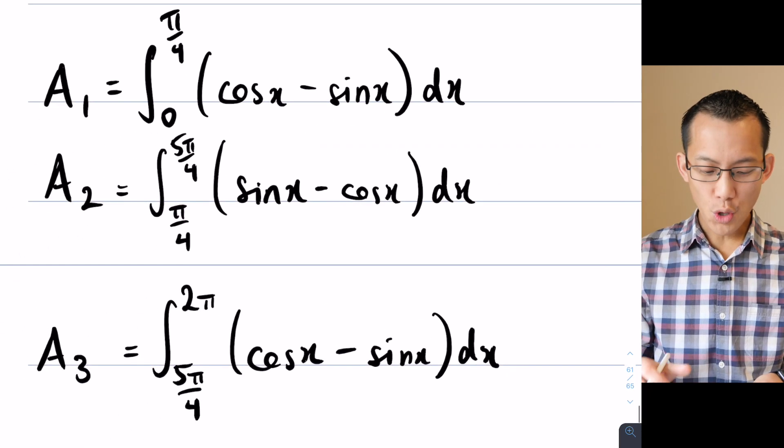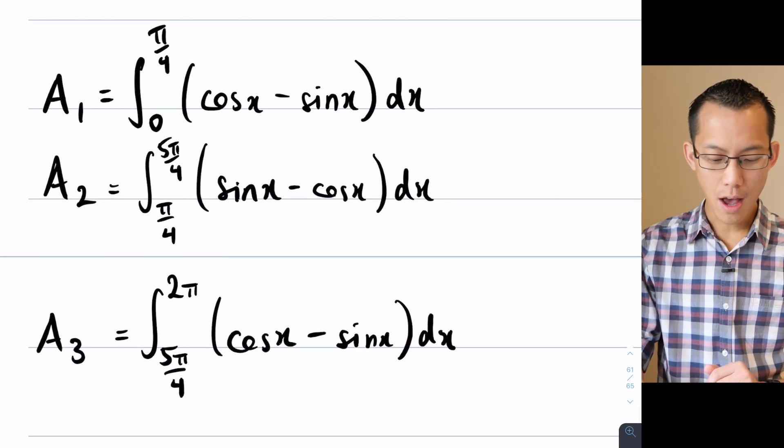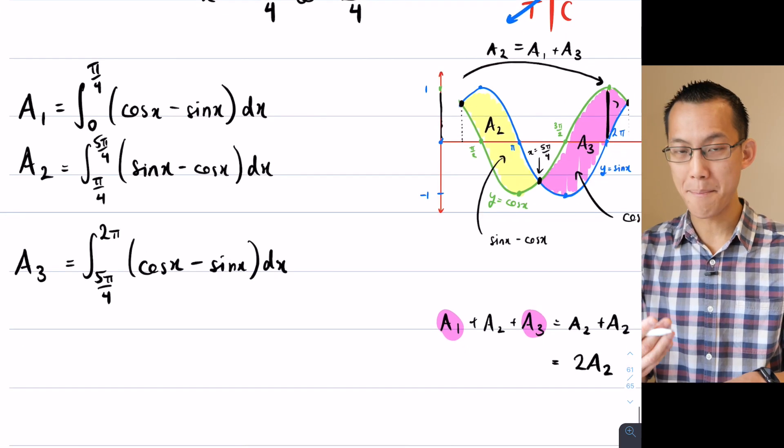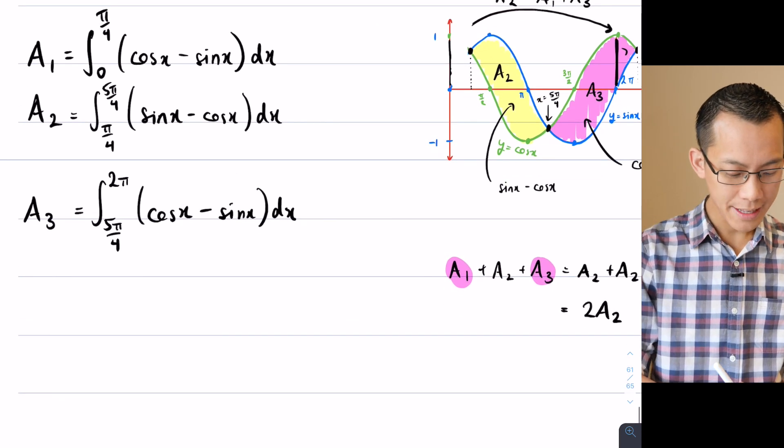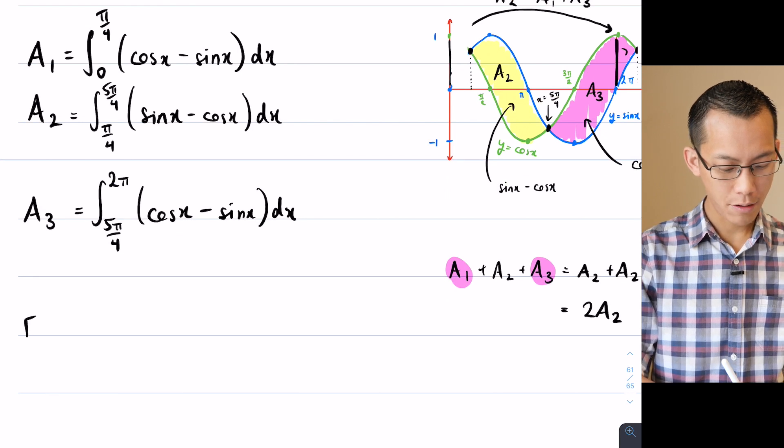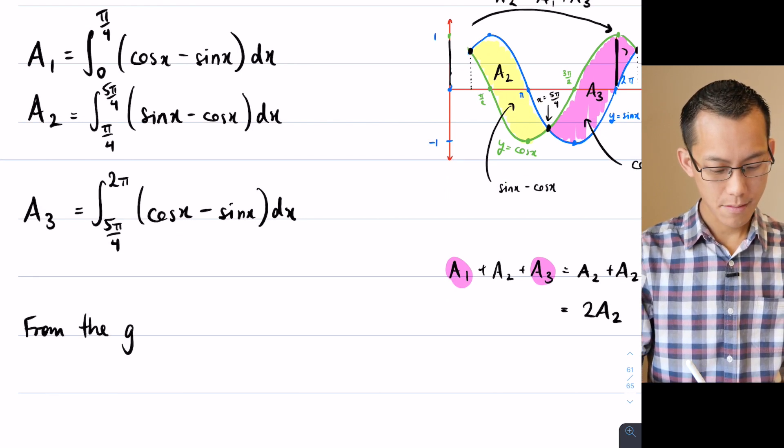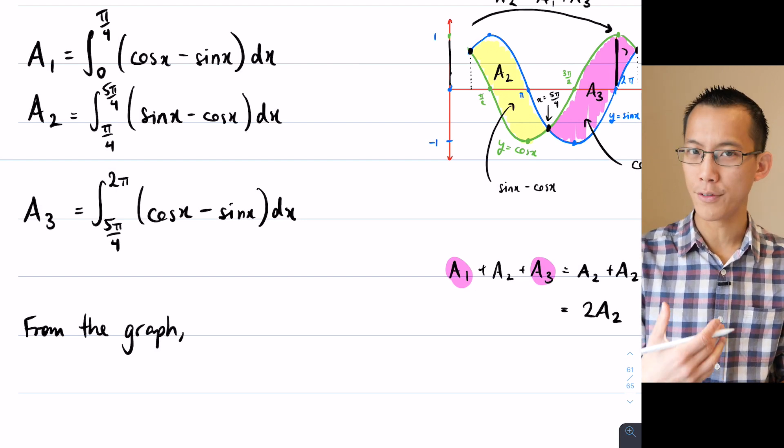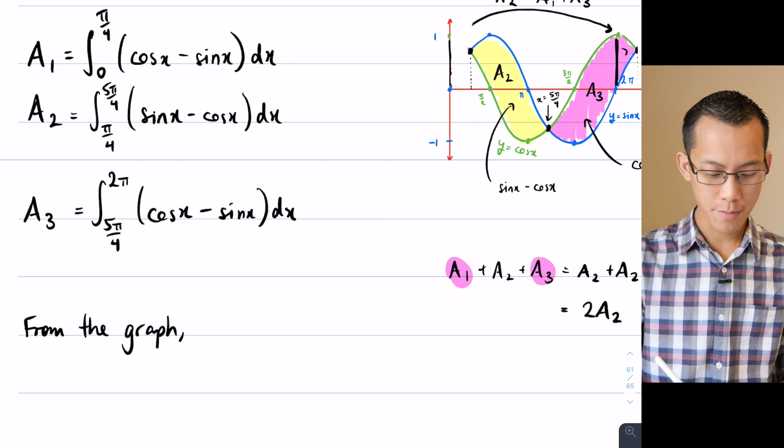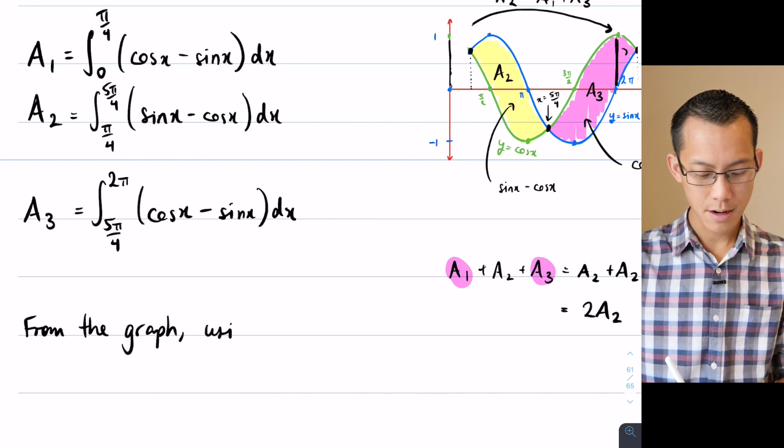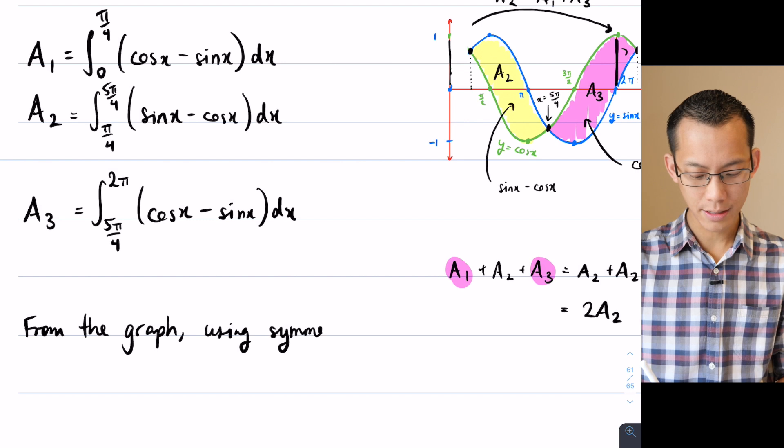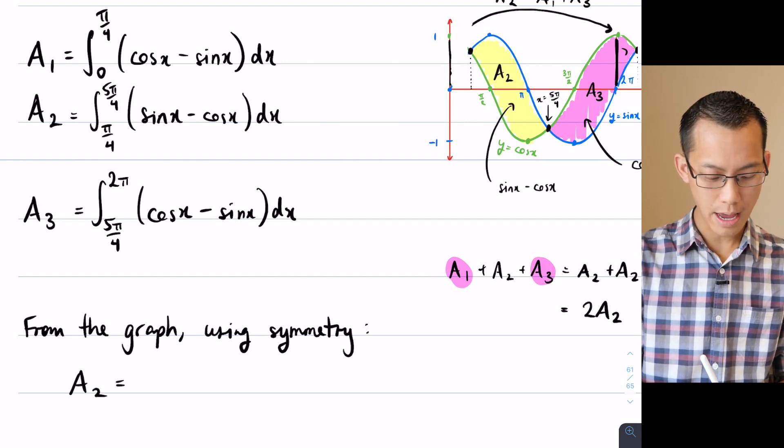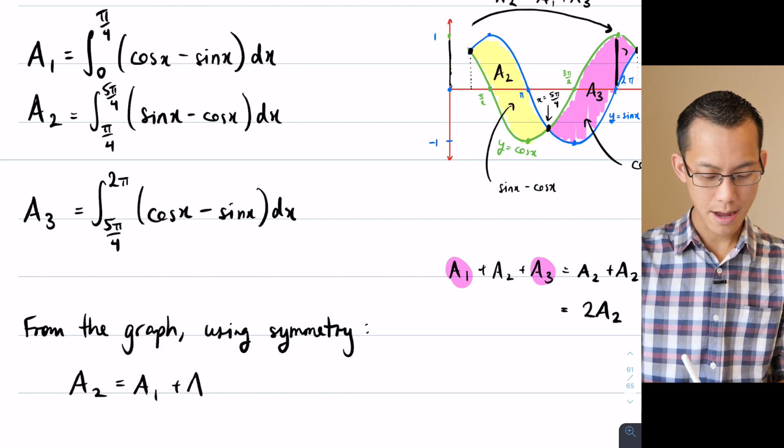Instead of doing all three of these integrals, I can say from my graph, because this is actually how I'm making my argument. I can say from the graph, and obviously you need your graph to be decent enough to provide part of your visual argument here. From the graph, using symmetry, I'm going to say the exact statement over here. A2 equals A1 plus A3.